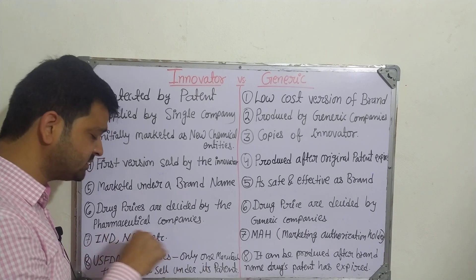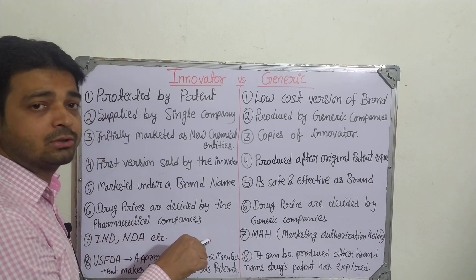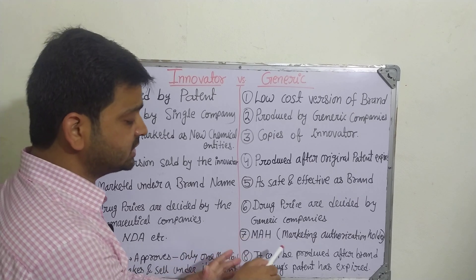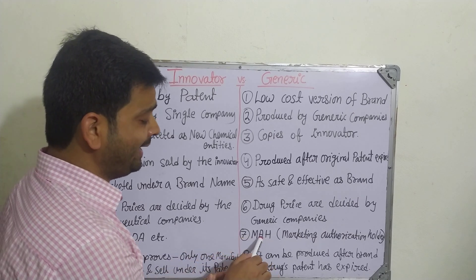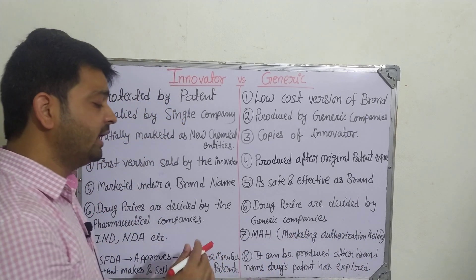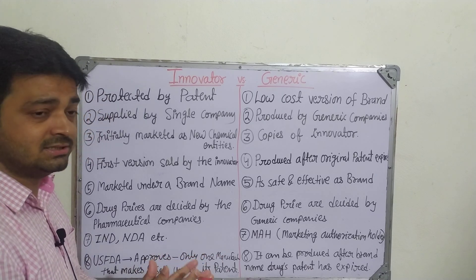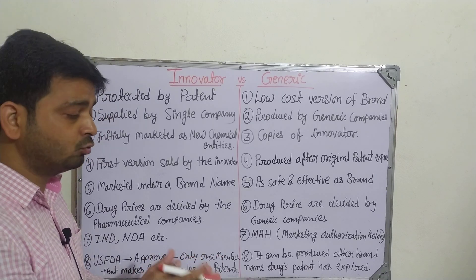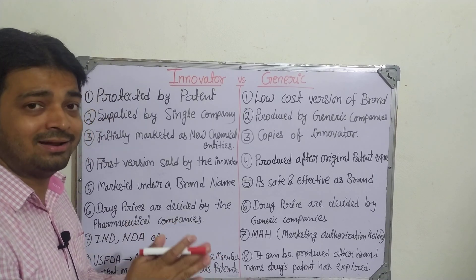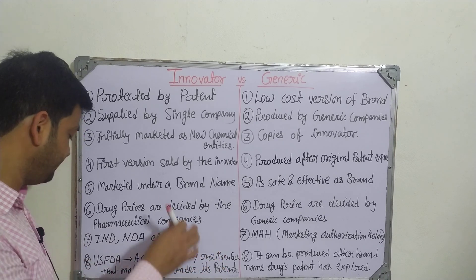They have to pass through the proper channel. In the generic case, it is the MAH — Marketing Authorization Holder — who makes decisions on how to manufacture, what quantity, large scale, price, and all those related things.